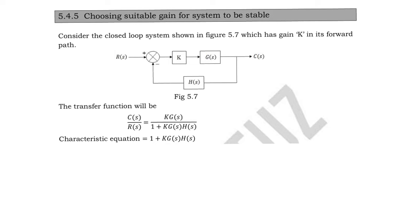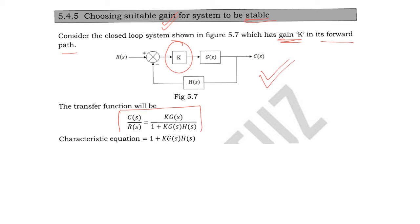Next we will see how the gain of a system can ensure the stability of the system. Here you have a standard closed-loop transfer function with a gain k in the forward path. So the transfer function will be kG divided by 1 plus kGH, because in the forward path instead of G we now have k times G.